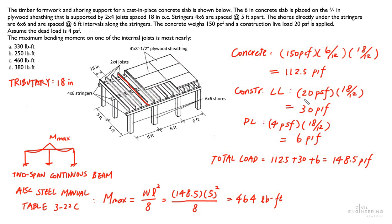We're going to use the same concept to calculate the construction live load and dead load. For the live load we have 20 psf, and then the span is the 18 inches, so the line load for live load is going to be 30 plf.